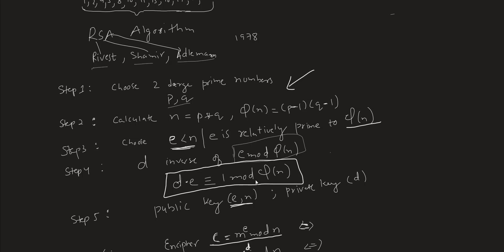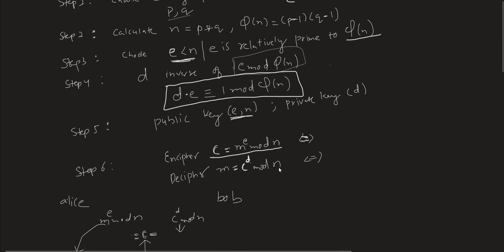That means if we multiply e with d, it should be congruent to 1 mod φ(n). Using all these values we can form our public key, which is a function of e and n, and the private key is a function of d and n, or sometimes represented just with the variable d.